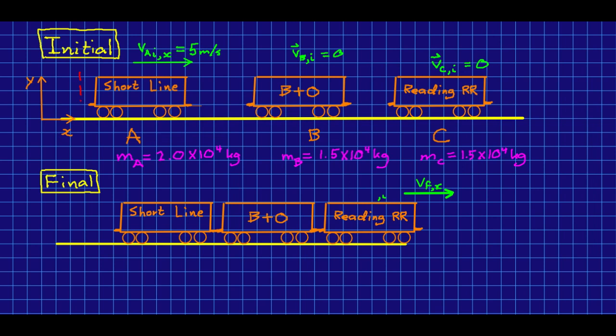Let's take our system to be just the train cars. So in particular, the track is not part of our system. And one of the things we should ask ourselves first is whether this system is isolated.